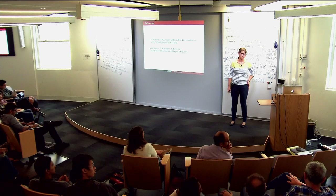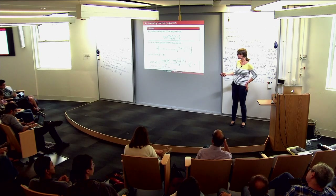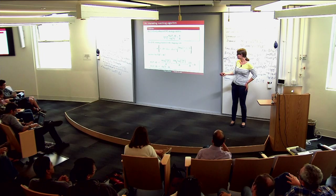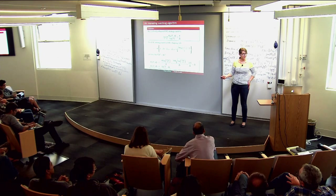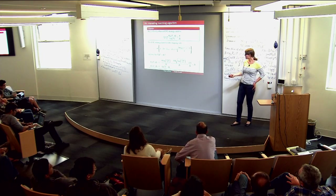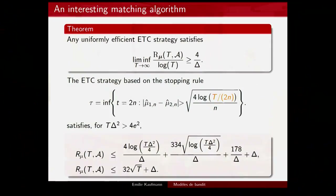Question: how is the last theorem different from what Vianney and Philippe did in their paper on bandits with covariance? The algorithm is different. For sure they already established that you should have the t·delta² term to also achieve the minimax rate. What is for sure different here is that we match the Lai-Robbins bound and they do not. The difference is that we are both minimax optimal and problem-dependent optimal.